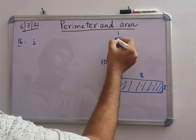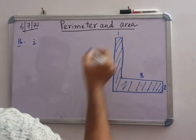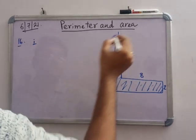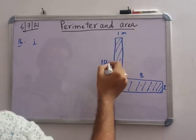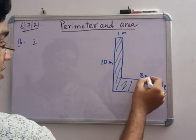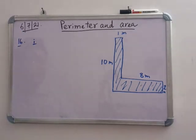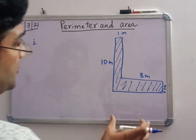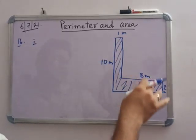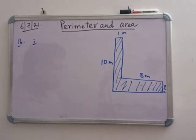This length is given as 1 meter, this is 10 meter, this is 8 meter, and this is 2 meter. You have to find the area of the shaded part. It is not straightforward to find this region normally, so you have to break it into types of figures.